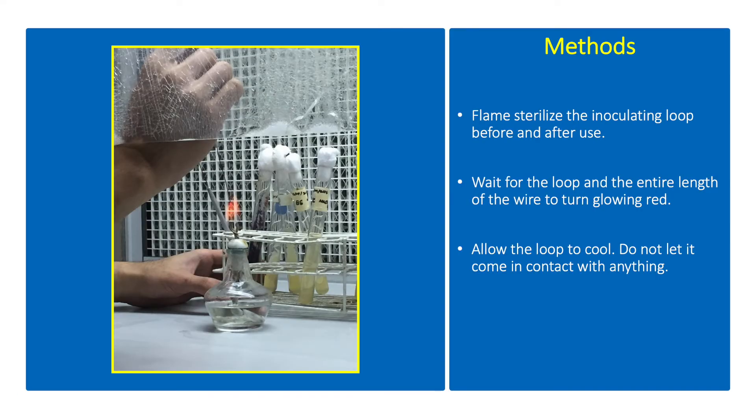Perform the transfer of inoculum inside the laminar flow hood or biosafety cabinet. Disinfect the hood with 70% ethanol. Light an alcohol lamp and place the cultures, slants, and tubes near the alcohol lamp. Use a test tube rack and do not lay the tubes on the table. Do not open the air filter when performing the transfer of inoculum inside a laminar flow hood. This might expose the researcher from airborne contaminants from the culture.